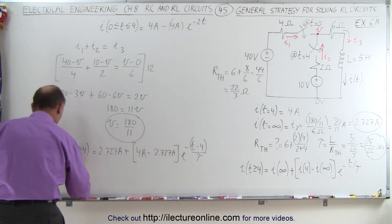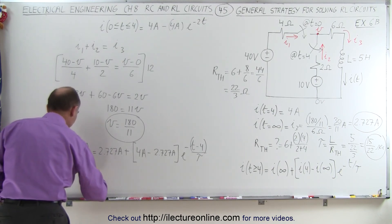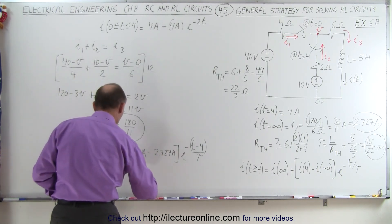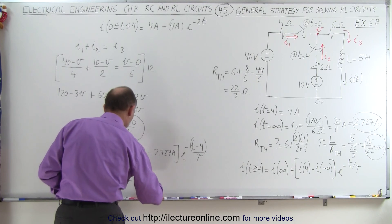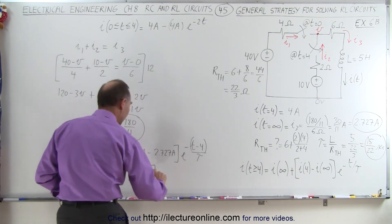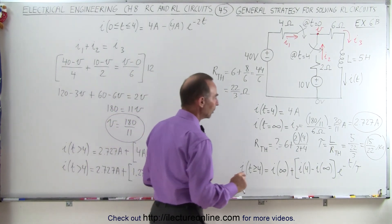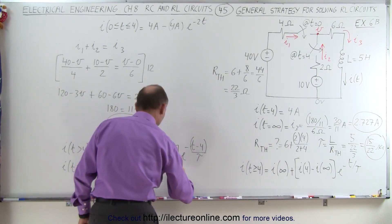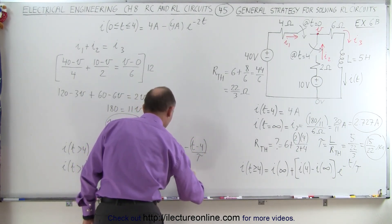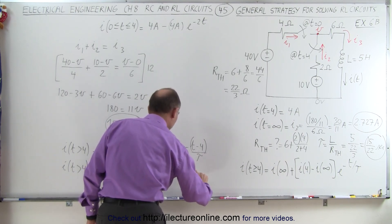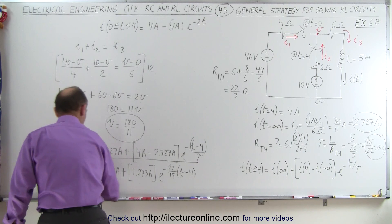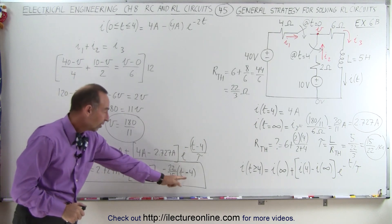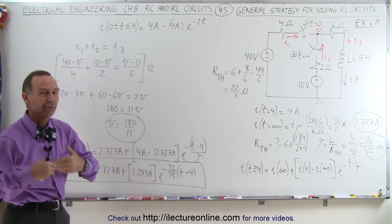Completing the expression: the current for T greater than 4 seconds equals 2.727 amps plus 1.273 amps times e to the minus (22/15) times (T − 4). Since τ = 15/22 seconds, the rate is 22 over 15. We account for the fact that the second switch doesn't close until 4 seconds later, so the exponential decay starts at T=4. And that's how it's done.